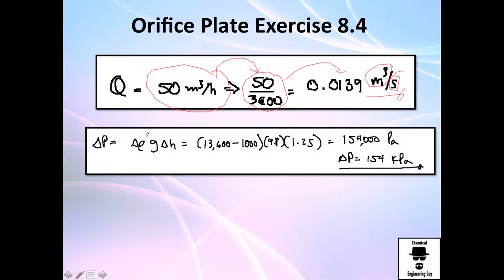Now the change in pressure is essentially the difference in density times gravity times the height which the operator reported. So the change in density is this one - mercury minus water. The gravity is 9.8 and the change in height is 1.25 meters. Calculate this and you find it to be 154,000 pascals.